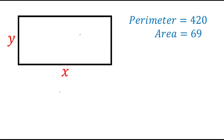Hello students. In this video we are going to solve an isometry problem. Here we have a rectangle in which the perimeter of this rectangle is 420 and the area of this rectangle is 69. Our task is to calculate x and y, where x is the length of this rectangle and y is the breadth of this rectangle.